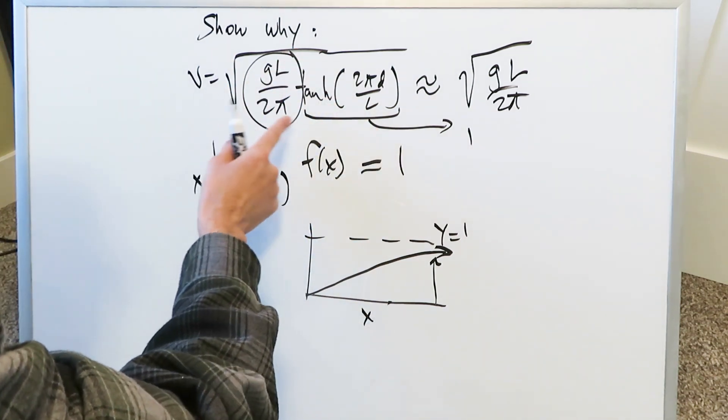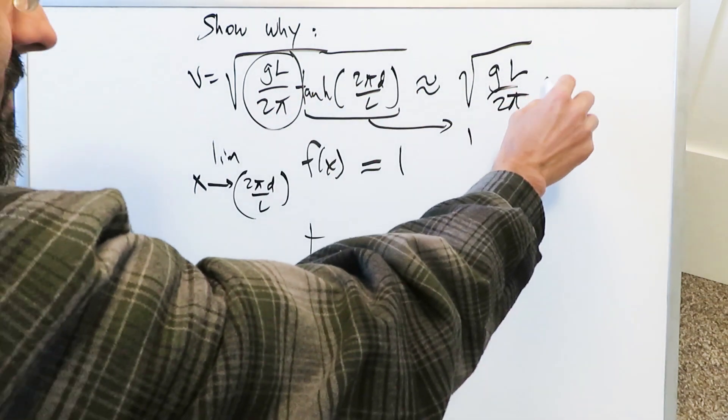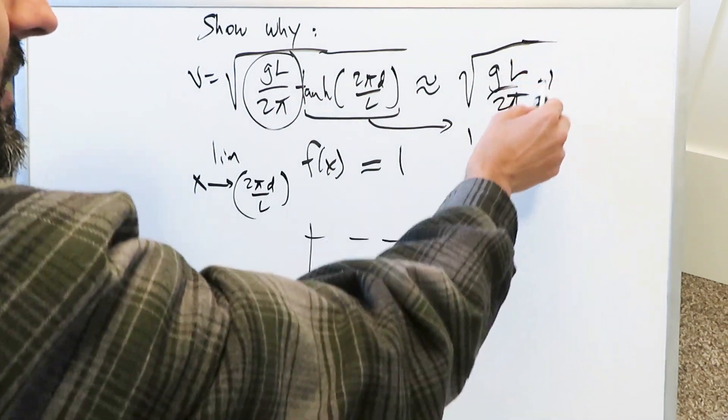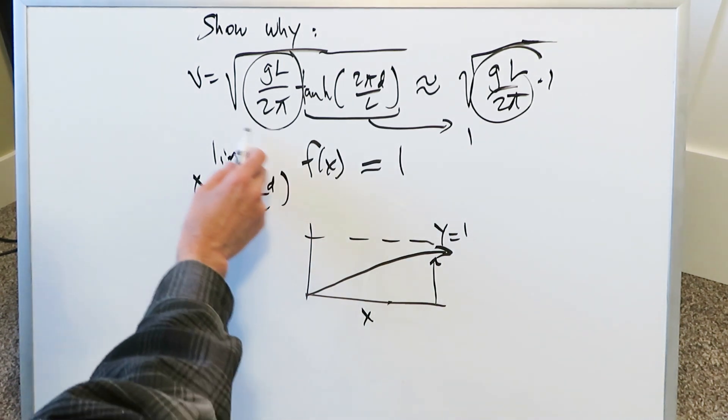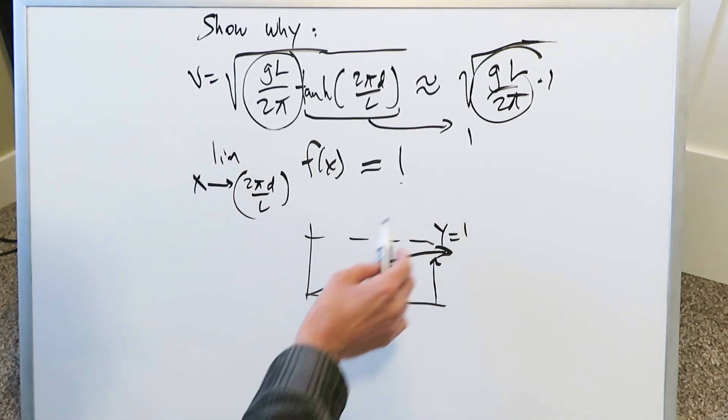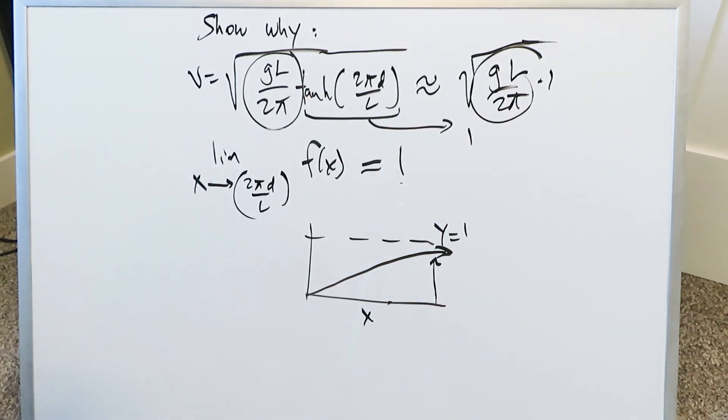So essentially, for a velocity of an ocean wave in relatively deep water, or even in deep water, all of this is basically a times 1 over here, and the equation just boils down to that, and that right there answers your question. Again, it has to do with this limit and the function approaching 1 very early on, and your equation is very much simplified to that. And that's all I wanted to present for you in this video.